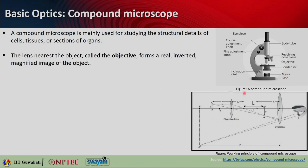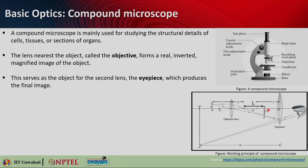Looking at the working principle of the compound microscope, there are basically two lenses. The lens near the object is called the objective lens, which forms a real inverted magnified image of the object — object AB with height h. The objective lens forms a real inverted image A'B' with height h'. This image serves as an object for the second lens, the eyepiece, which produces the final image A''B'' — a much larger, magnified virtual image.